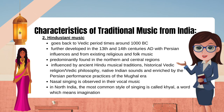2. Hindustani music goes back to Vedic period times around 1000 BC, further developed in the 13th and 14th centuries AD with Persian influences and from existing religious and folk music. Predominantly found in the northern and central regions, influenced by ancient Hindu musical traditions, historical Vedic religion/Vedic philosophy, native Indian sounds, and enriched by the Persian performance practices of the Mughal era. Nasal singing is observed in their vocal music. In North India, the most common style of singing is called kule, a word which means imagination.